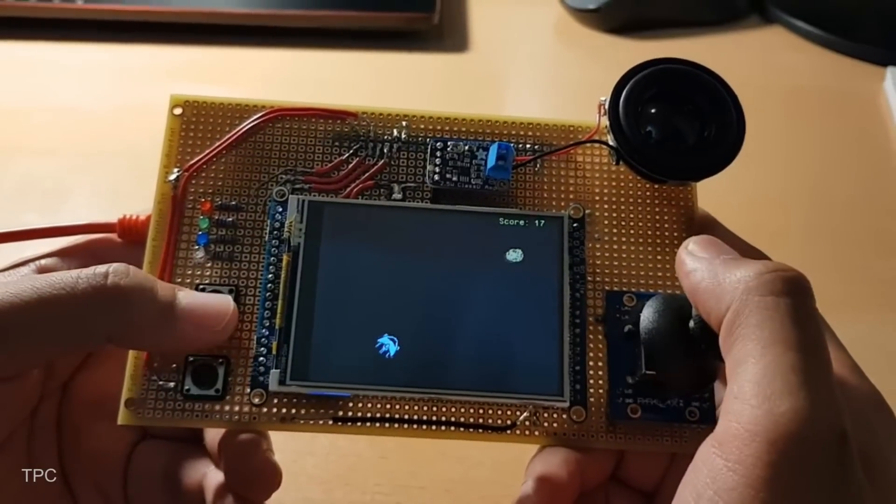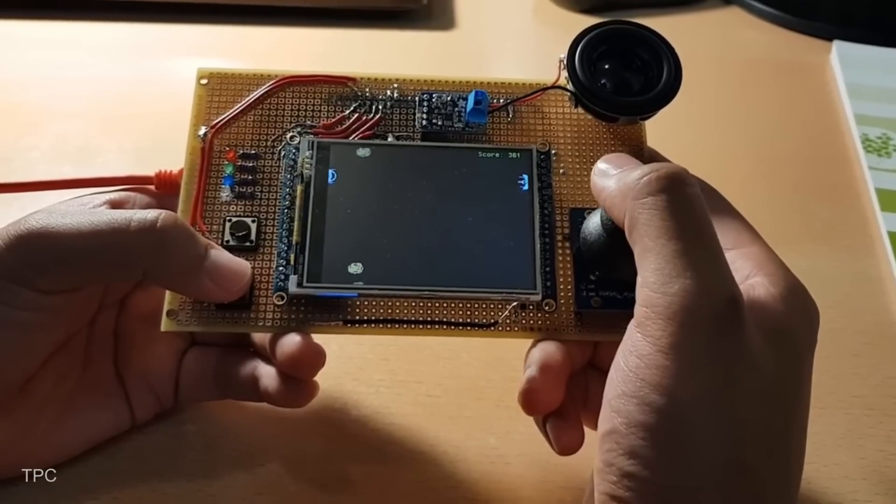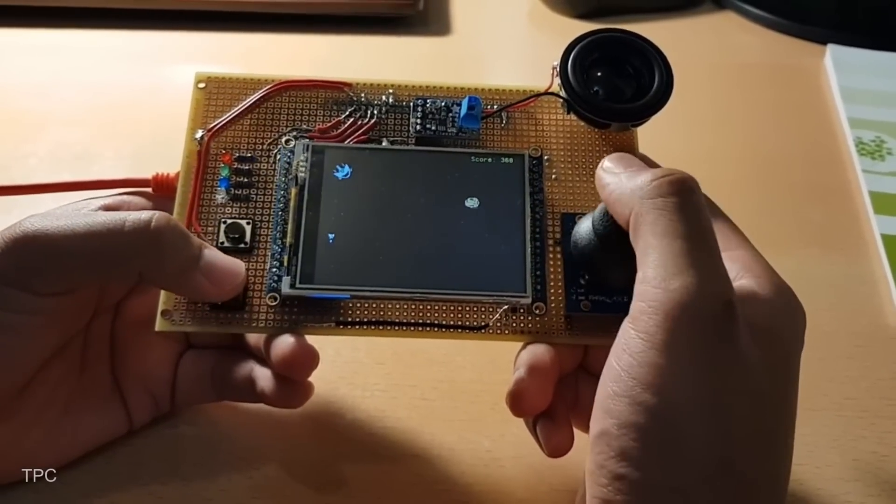One cool feature is how objects wrap around the screen. When your spaceship flies off one edge, it seamlessly reappears on the other side, giving the illusion of an endless universe.